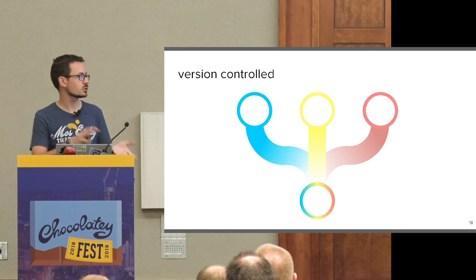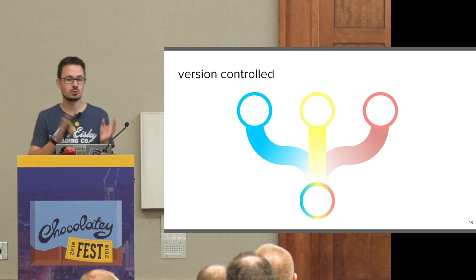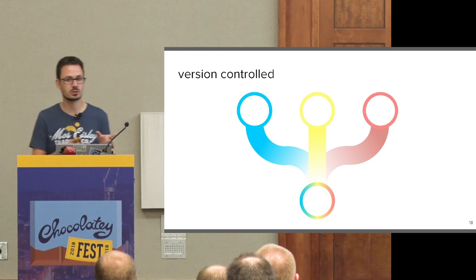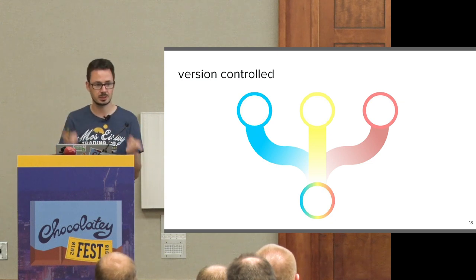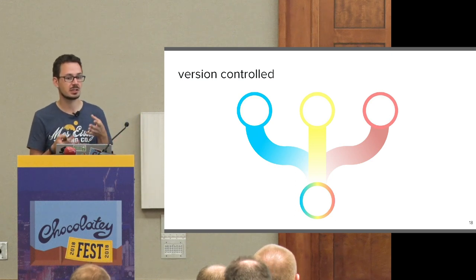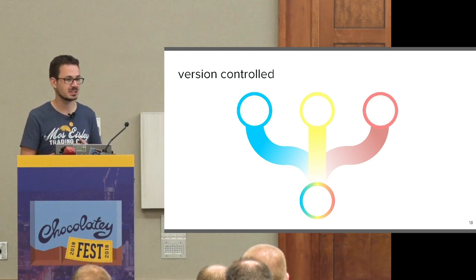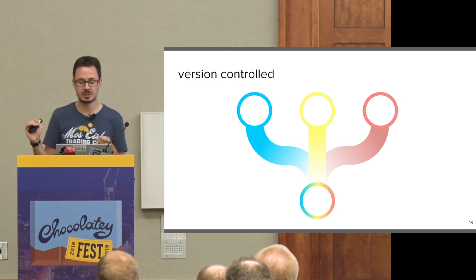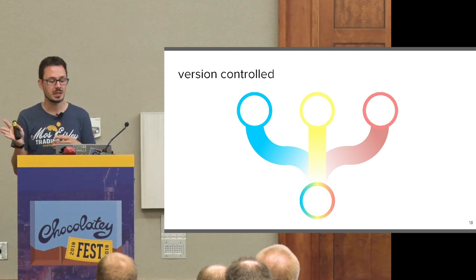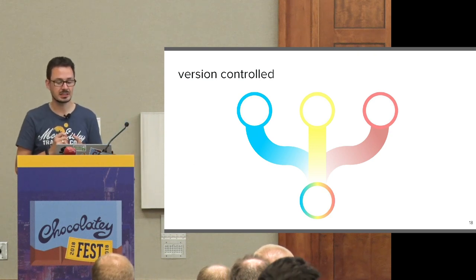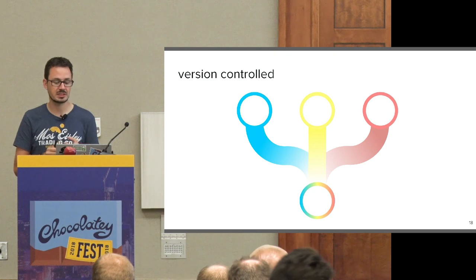Version control — even if you do not have all your Chocolatey install scripts and nuspec files in version control, which I highly recommend you should do, you still get the versioning that NuGet gives you, which Chocolatey is based upon. By adding the --version switch on choco install or choco upgrade, you can specify which version of a package you want to install. And this is really nice in certain use cases.